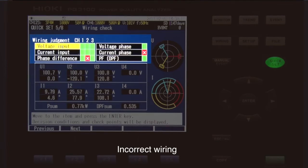Incorrect wiring is indicated in red. Yellow signals that you should double-check the wiring.